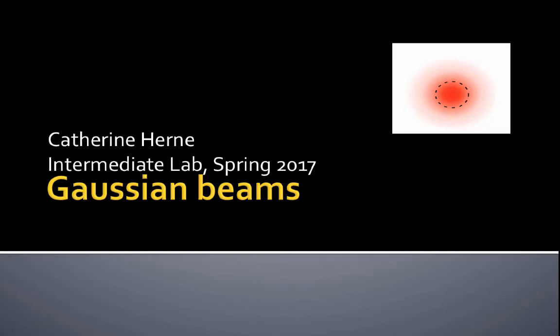This is an introduction to the Gaussian beams lab for the intermediate lab class. For those of you who have had optics, this will be an overview of what you've done and what you remember from class. For those of you who have not had optics, there will be a lot of material that will be new, and we will emphasize the parameters that you need to know and how to use them.